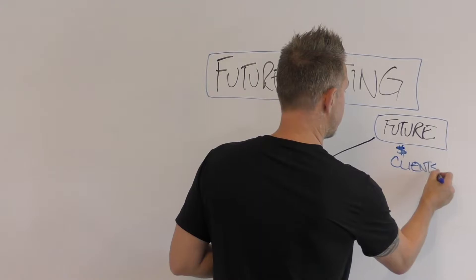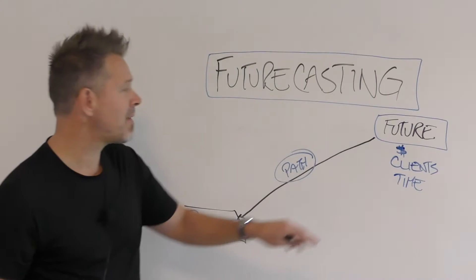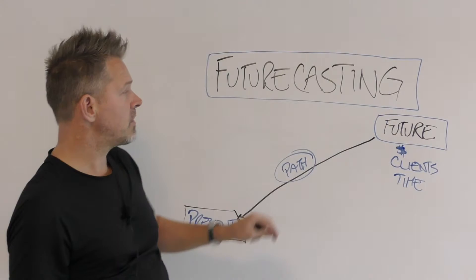First thing you want to think about is how much money do I want to be making in the future? Let's talk about it and say in five years from now. So in five years from now I want to be making $400,000 a year, or $500,000 a year, or a million dollars a year.